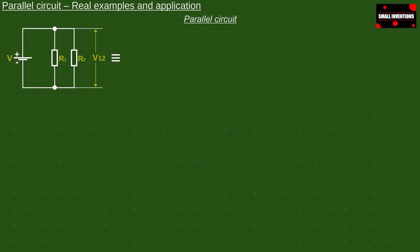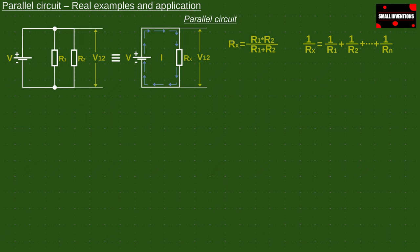As with a serial circuit, we can also simplify a parallel circuit. In this case, we calculate the total resistance according to the equation. This equation is used only for two parallel resistors. An official equation can be used for three or more resistors.